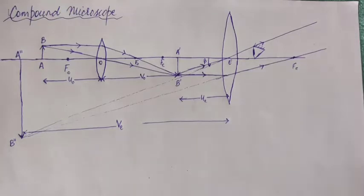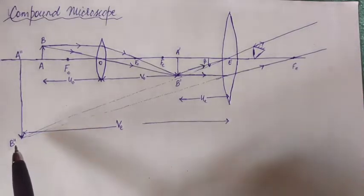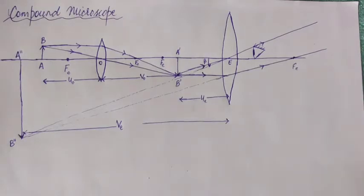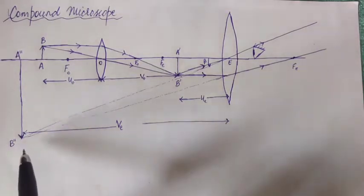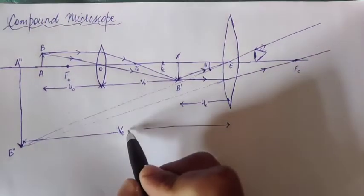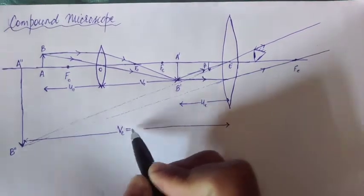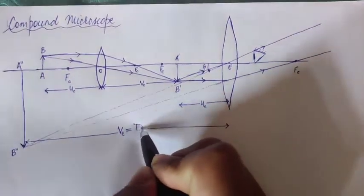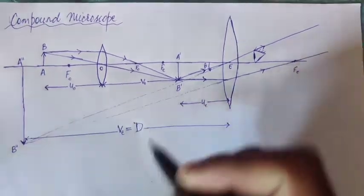We will now calculate the magnifying power of the compound microscope. We will consider two cases: Case 1 is when the final image is formed at the least distance of distinct vision — the normal use case. Case 2 is when the final image A''B'' is formed at infinity, which is when the eye is most relaxed. We will first consider the case when VE, the image distance from the eyepiece, equals the least distance of distinct vision D.